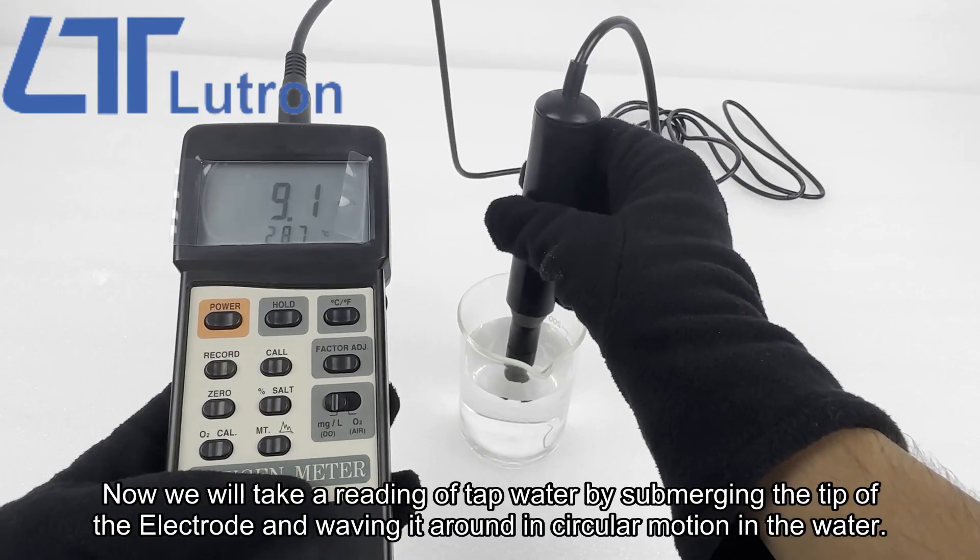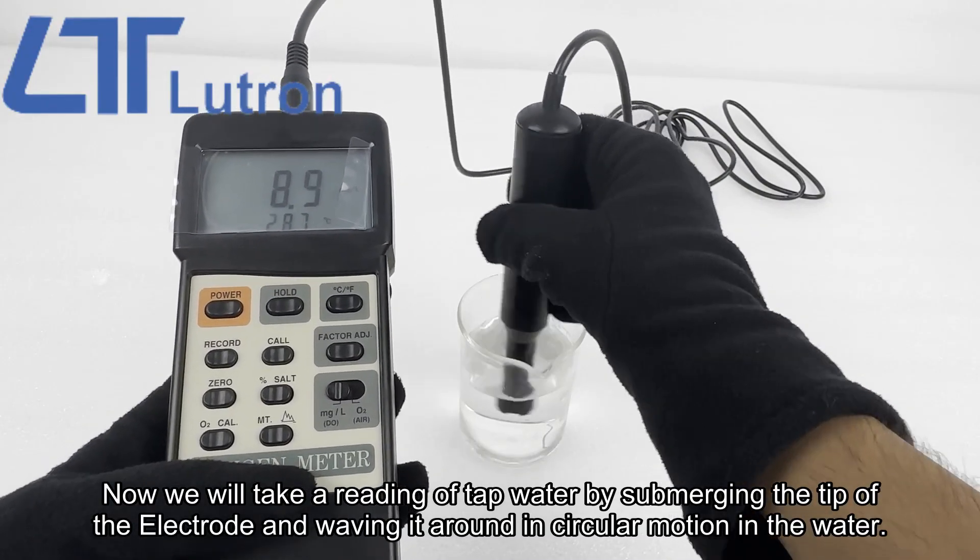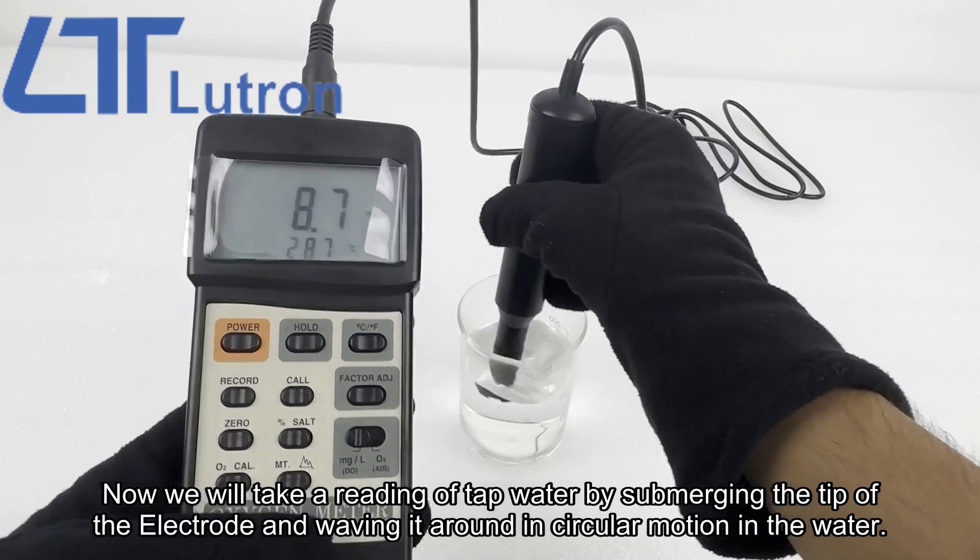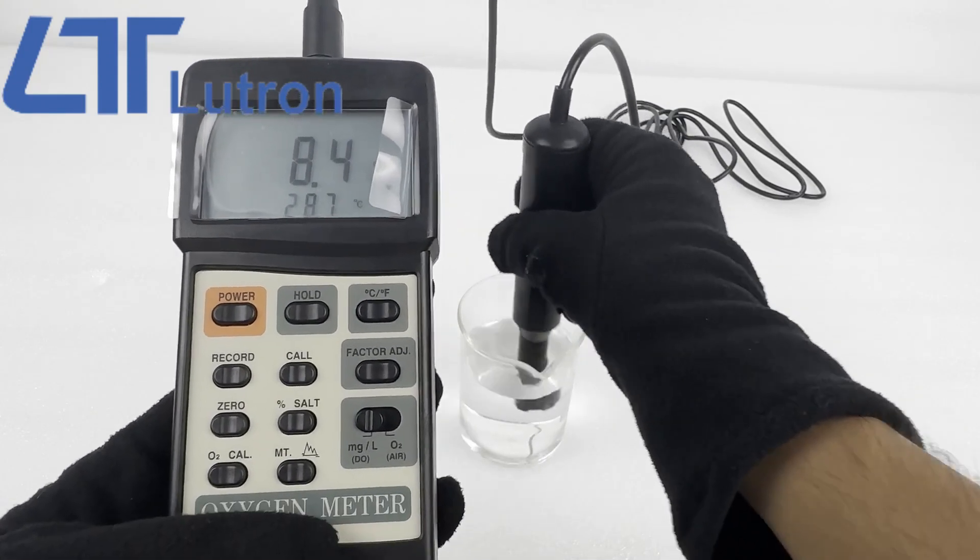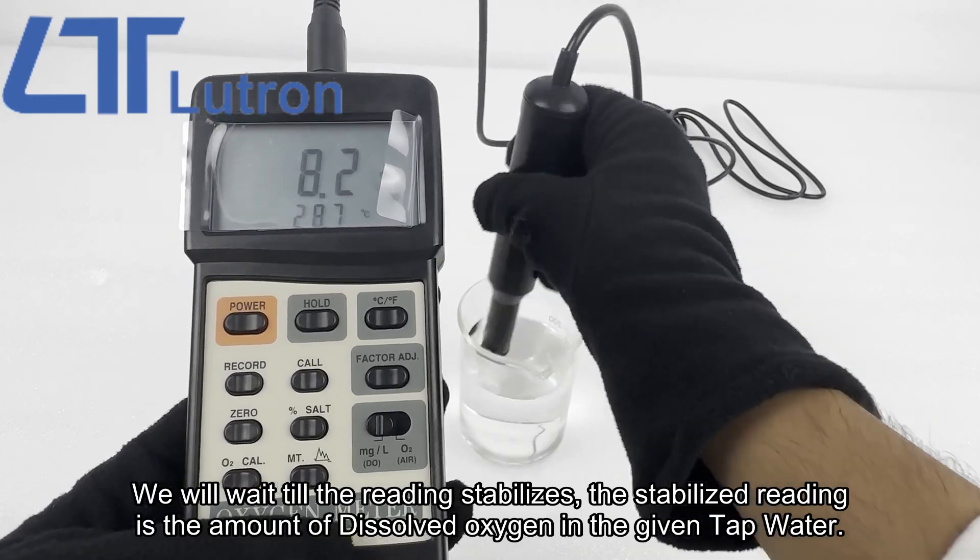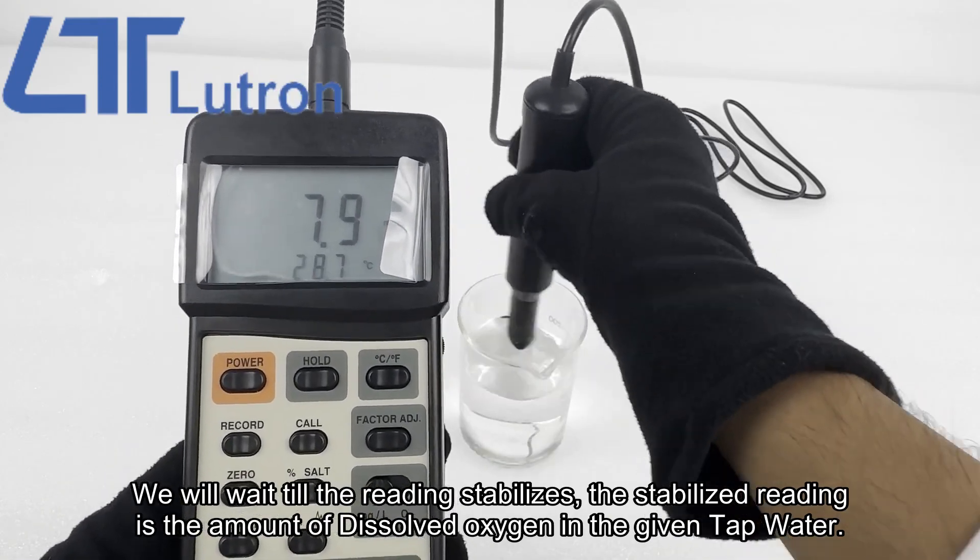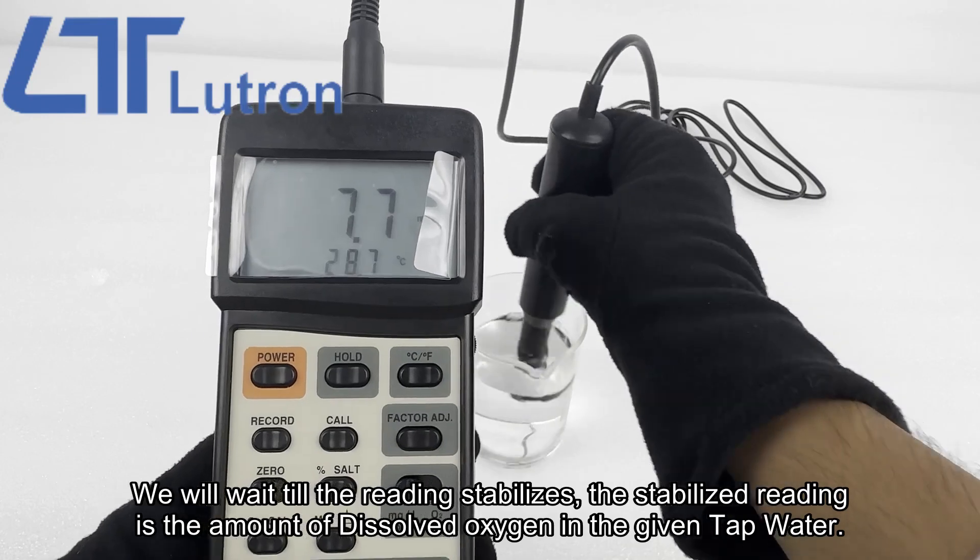Now we will take a reading of tap water by submerging the tip of the electrode and waving it round in circular motion in the water. We will wait till the reading stabilizes. The stabilized reading is the amount of dissolved oxygen in the given tap water.